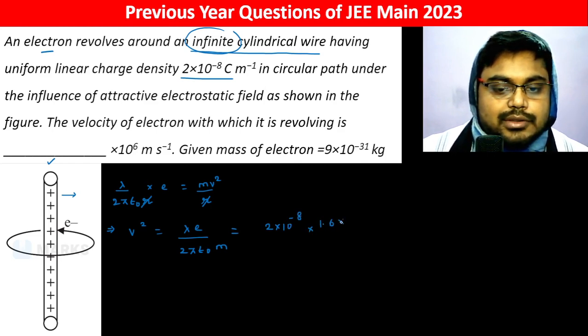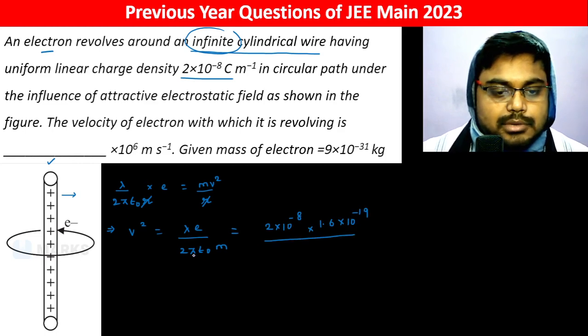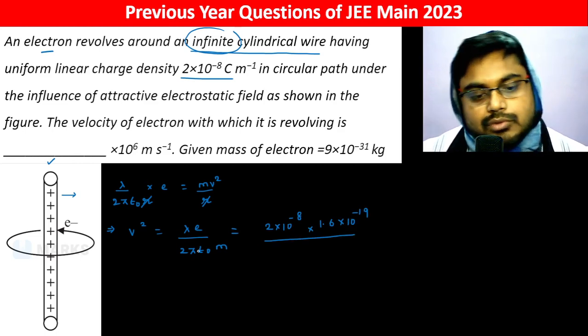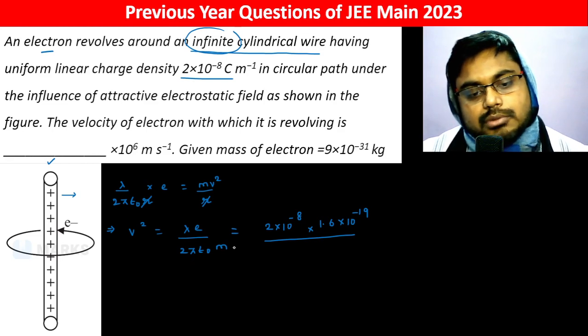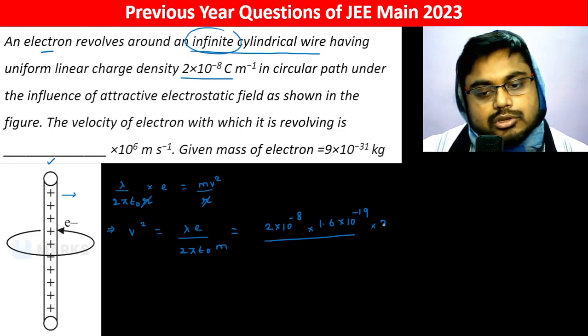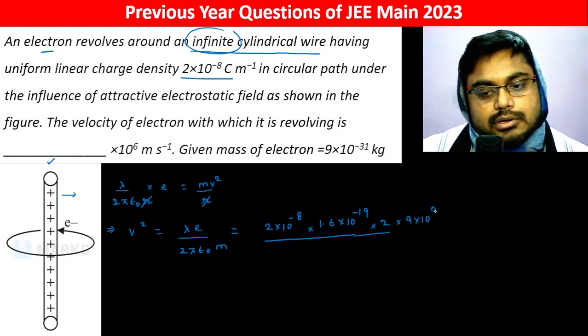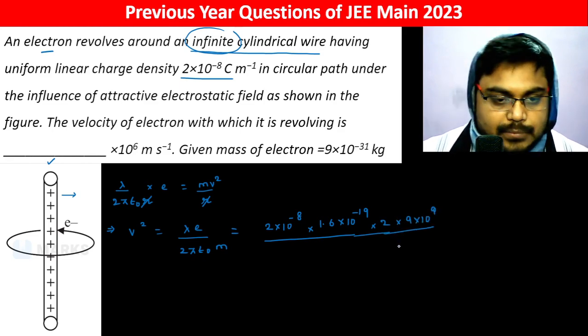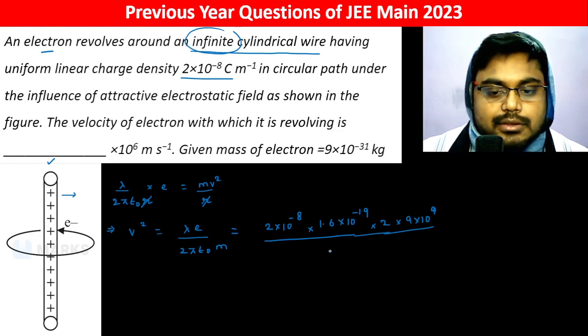E is 1.6×10⁻¹⁹. Here we have 1/(2×4πε₀), which gives 9×10⁹. M is 9×10⁻³¹.